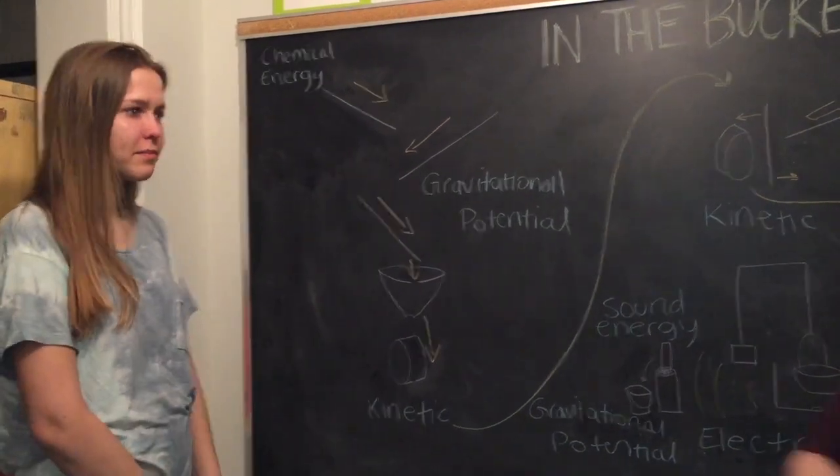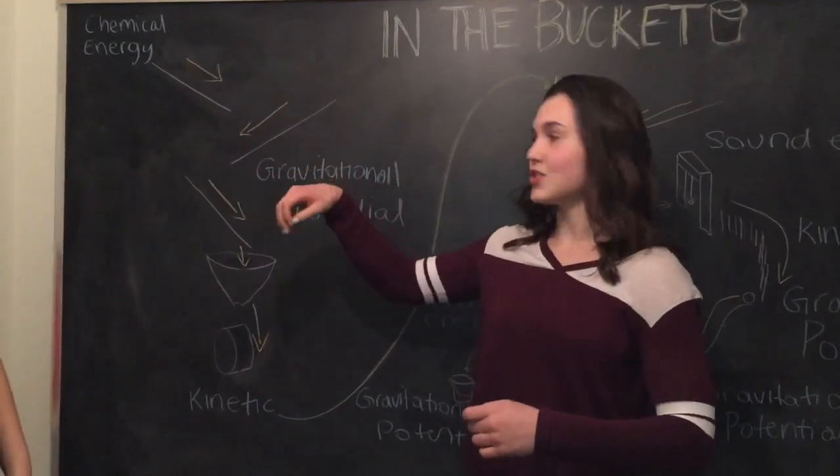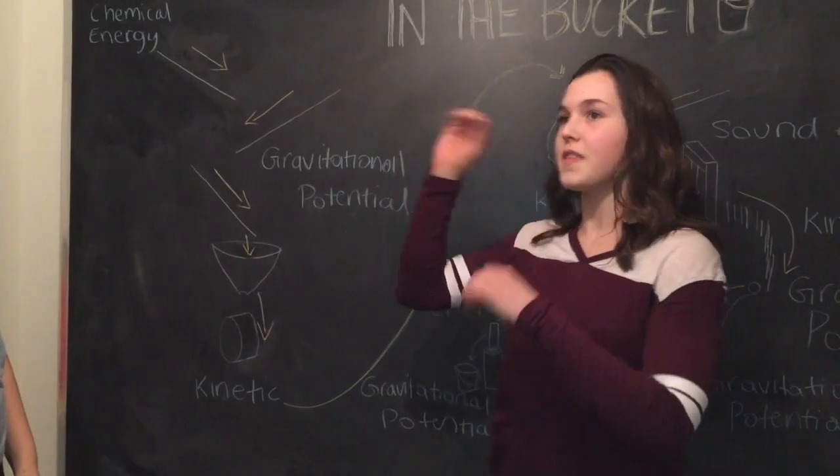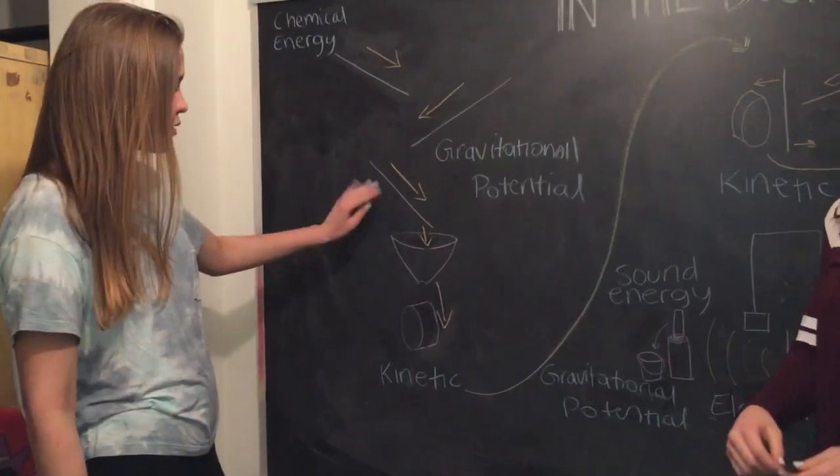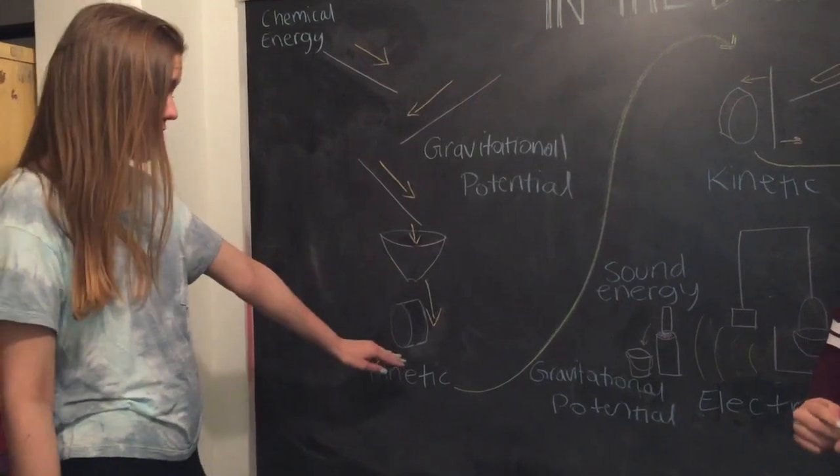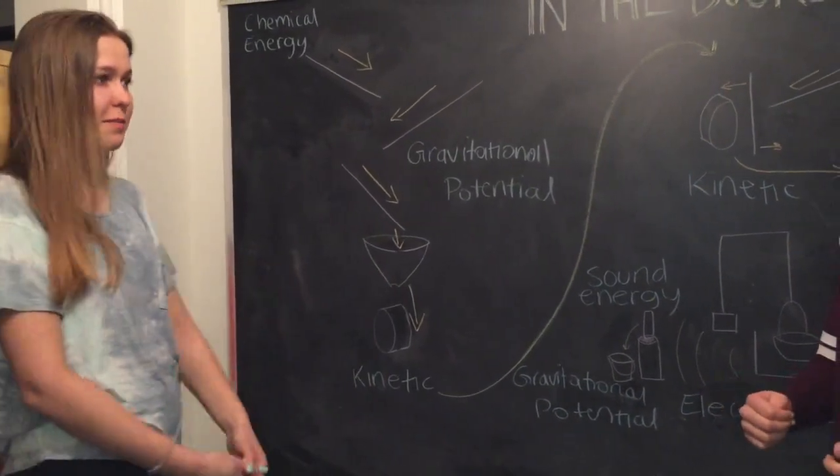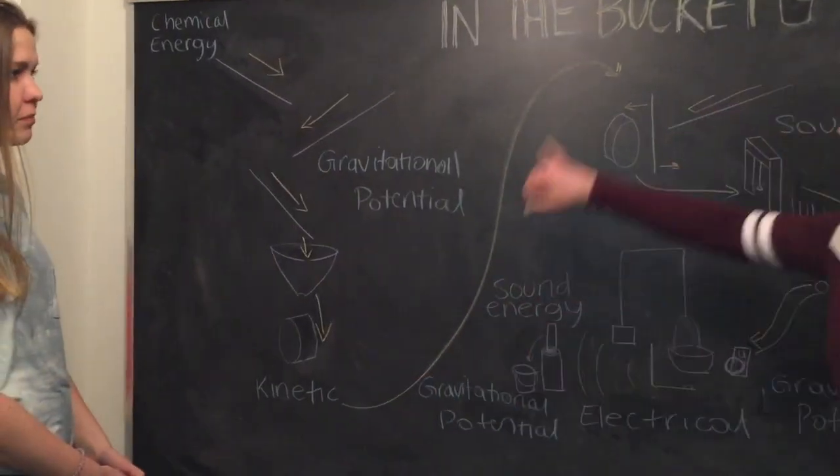It then goes into the funnel which then knocks over the tape, which is kinetic energy, and that is also gravitational potential energy when it goes down that ramp. It then hits the pole and ruler that we had there holding this tape.